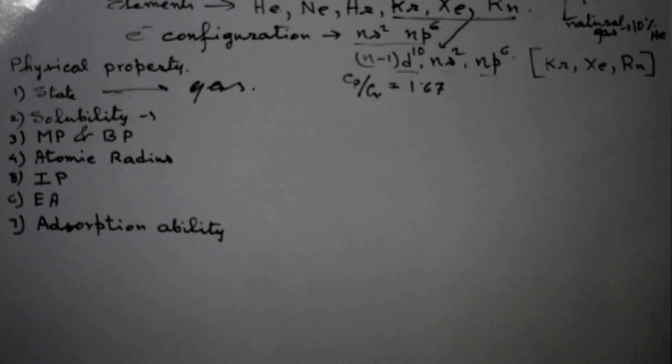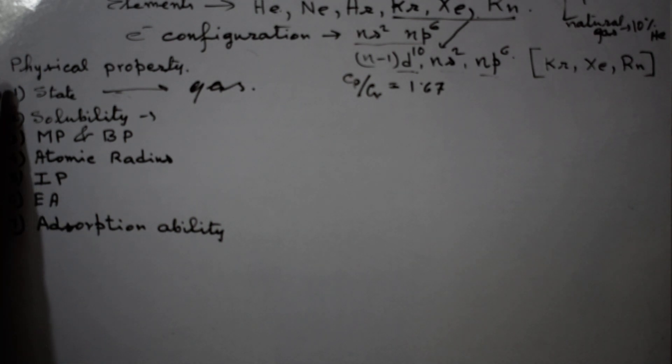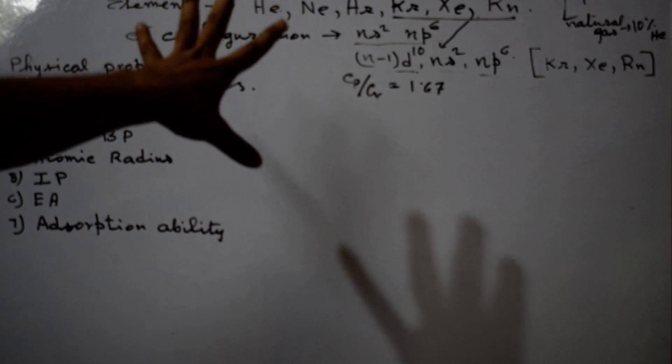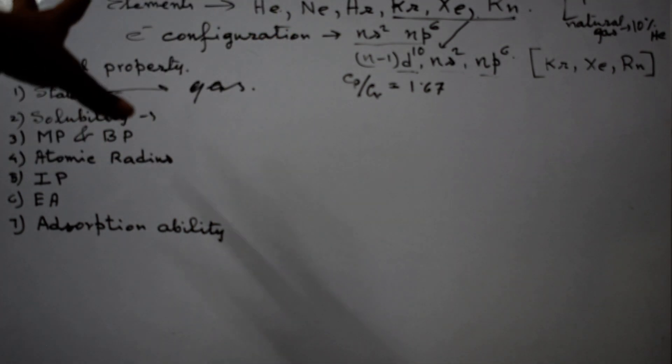So next, the physical property. The first physical property of inert gases is state. They have no unpaired electrons, so they cannot form any type of bond. That's why they are gaseous in nature.